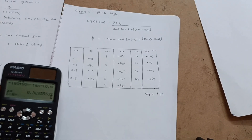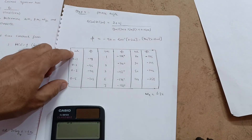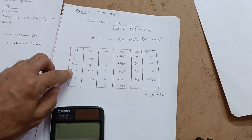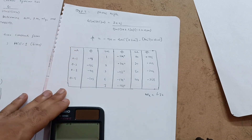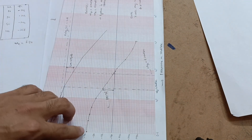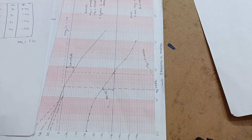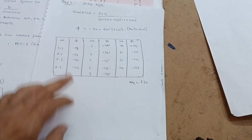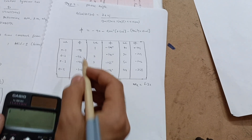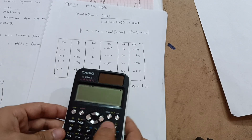You will also get the phase crossover frequency in the graph, which I will show you later. You have to take different values of omega: 0.1, 0.2, 0.3, 0.5, and a variety of values to complete the graph. In the graph we are taking different values of omega so that we can draw a smooth curve. I will show you one value as an example; the rest is for you to calculate.